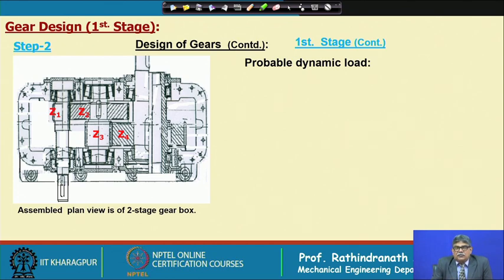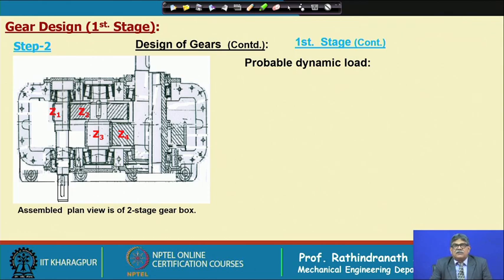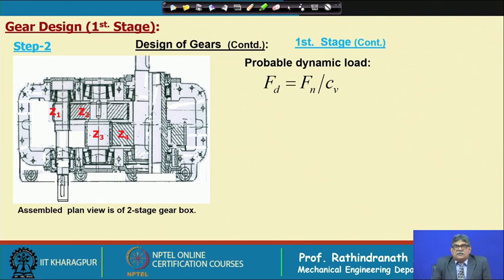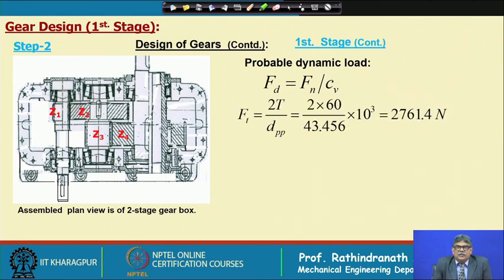Now we shall consider the probable dynamic load. One thing to mention: in the wear load equation for helical gears, cos³β appears in the denominator, but here we have not considered that factor — so the wear load would be slightly more. The probable dynamic load Fd is considered in the normal direction, because the wear load strength we calculated is also in the normal direction.